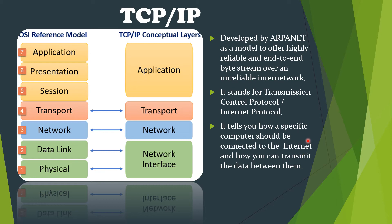If we have to connect our computer to the internet, TCP/IP tells us how we should connect and how data will be transmitted between the internet and our computer. As shown in the diagram, the OSI model has seven layers whereas the TCP/IP model has only four layers. In the Application Layer, it attaches a header to the message that is to be sent.